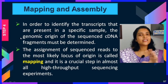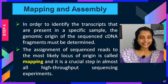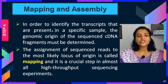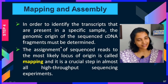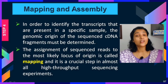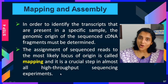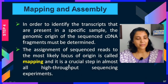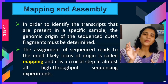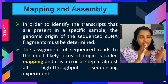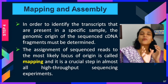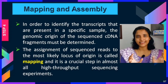After data processing, the next step is mapping and assembly. To identify transcripts present in a specific sample, the genomic origin of the sequence data fragments must be determined. The assignment of sequence reads to the most likely locus of origin is called mapping, and it is a crucial step in almost all high-throughput sequencing experiments. We are trying to find out where our sequence is on the chromosome — the mRNA has been reverse-transcribed to cDNA, and that is mapped back to understand its exact location.